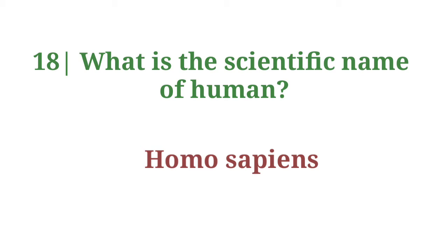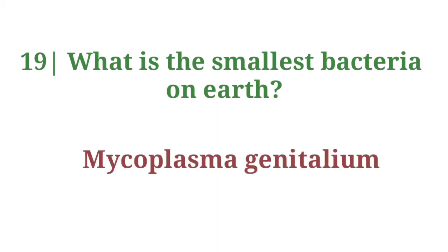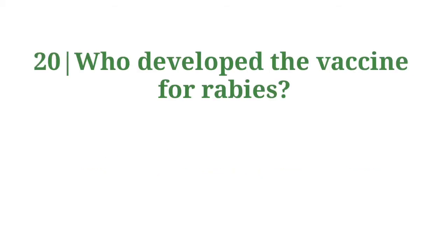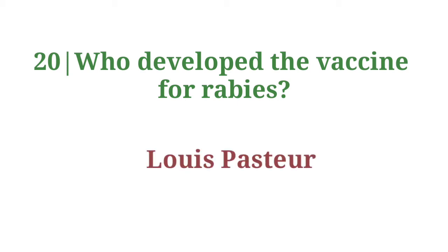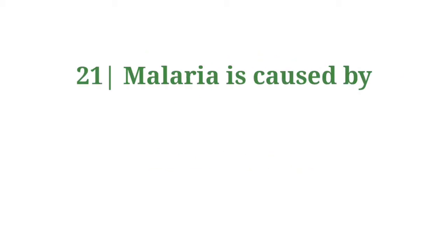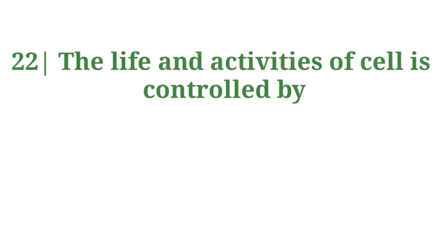What is the smallest bacteria on Earth? Answer: Mycoplasma genitalium. Who developed the vaccine for rabies? Answer: Louis Pasteur. Malaria is caused by Plasmodium. The life and activities of cells is controlled by the nucleus.